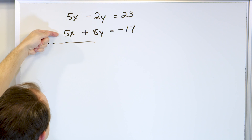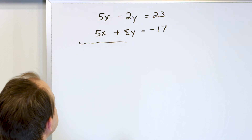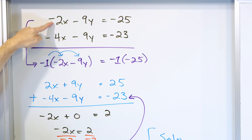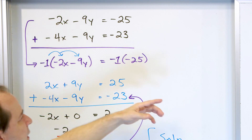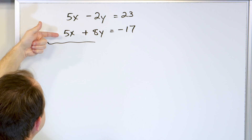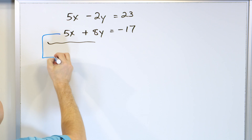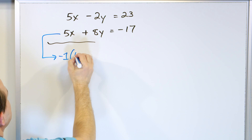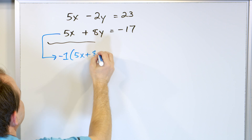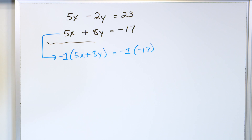So I have choices here, but the easiest thing to do is to recognize I have two 5x terms. I can either multiply the top equation by negative 1 or multiply the bottom equation by negative 1, and both will give exactly the same answer. In the previous example I multiplied the first equation, so just to make it different, let me work with the second equation here and show you it doesn't matter which one you do.